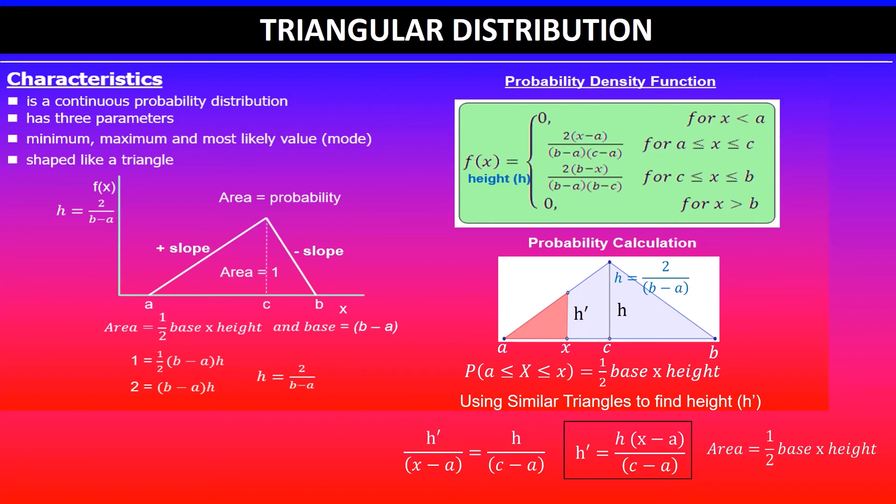Once you've got the height, you can then use the area formula, which is half the base times height, to find the probability. I would suggest you can pause the video and try this yourself. You don't need to memorize any of these formulas - you'll be given the formula sheet. But in the assessment it will say f(x). Please make sure you take note that f(x) gives the height of the triangle at the given x value.